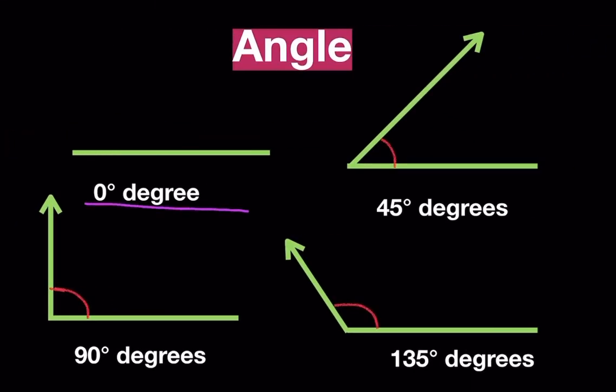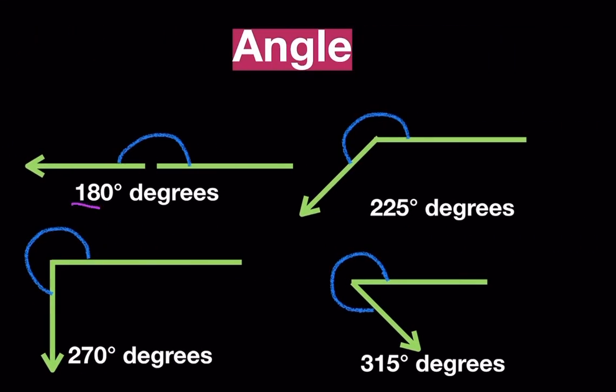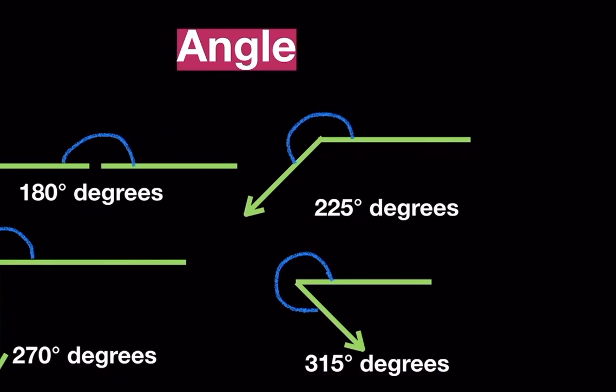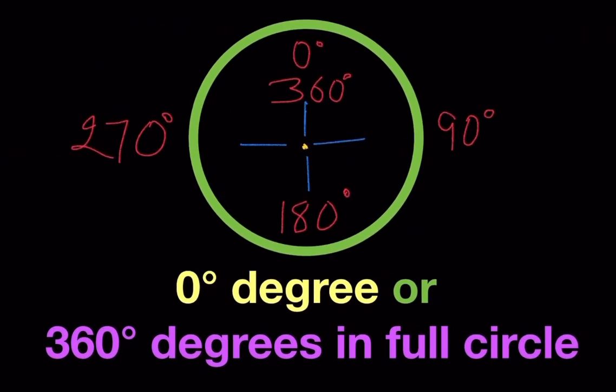0 degree, 45 degrees, 90 degrees, 135 degrees, 180 degrees, 225 degrees, 270 degrees, 350 degrees, 15 degrees, 0 degree or 360 degrees in full circle.